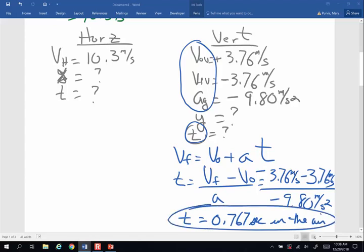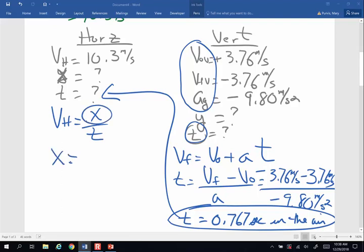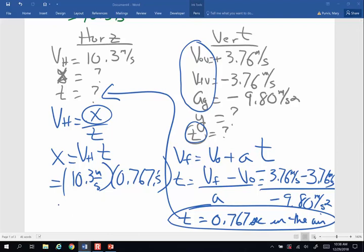Okay, that's my total time. Now that I have that, I can use that time here. And remember on the horizontal side, I can only use this equation for constant velocity. And I want to solve for distance, how far does she jump. So this is going to be horizontal velocity times time, 10.3 meters per second times my time of 0.767 seconds. I ended up with a displacement of 7.90 or 7.91 meters. That is the range, or the horizontal displacement.